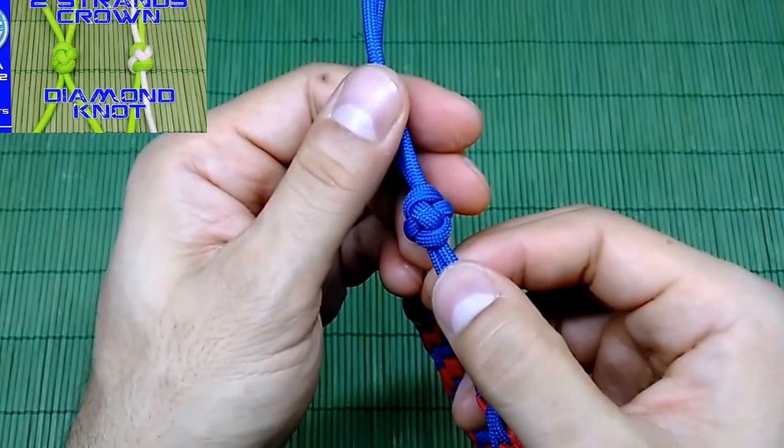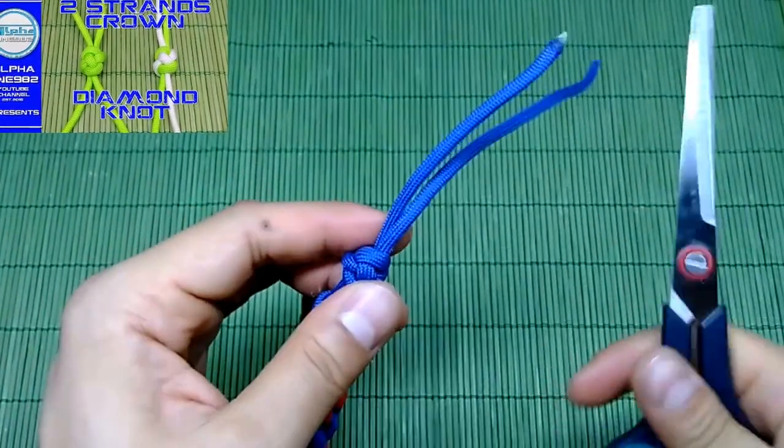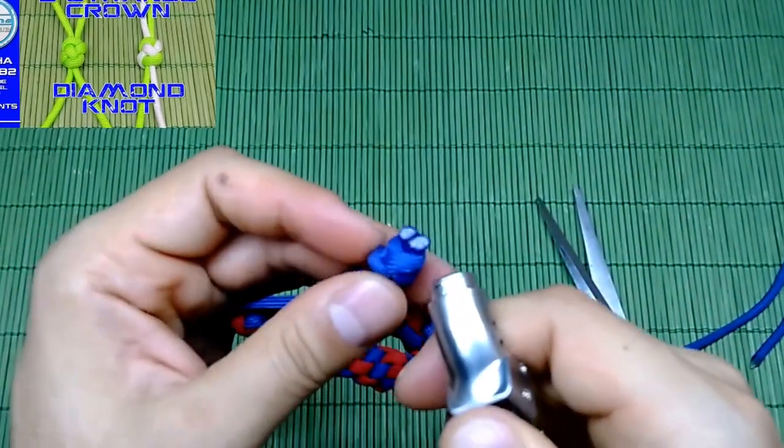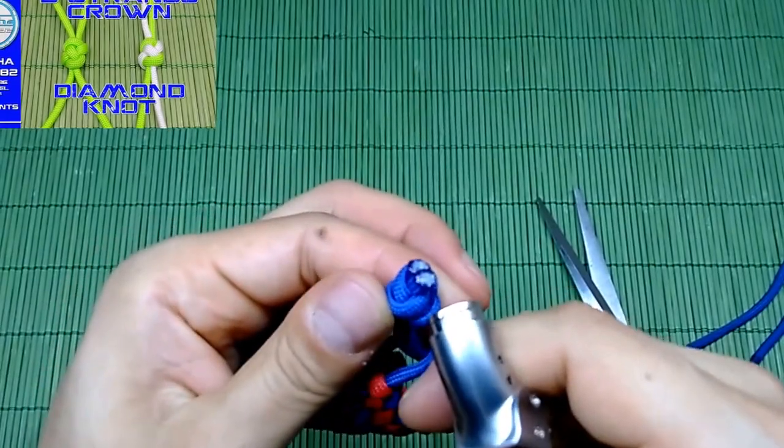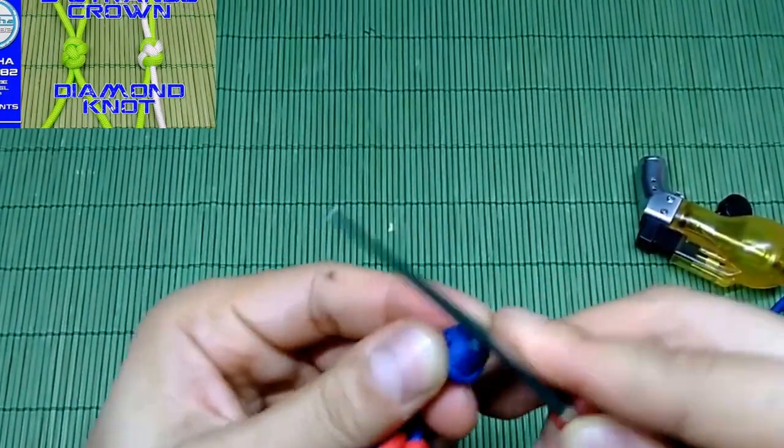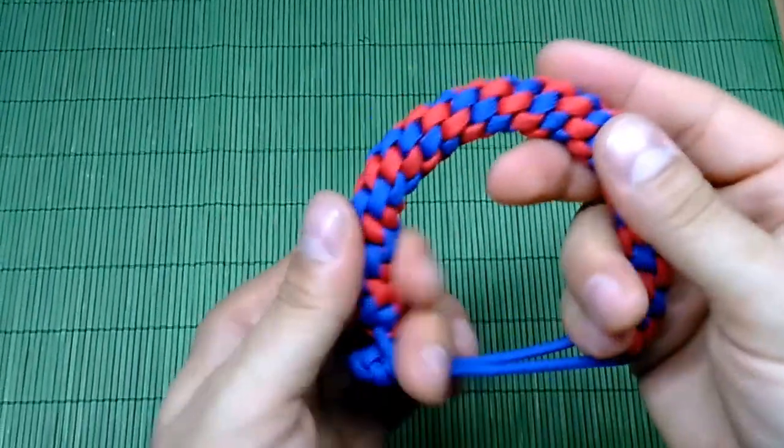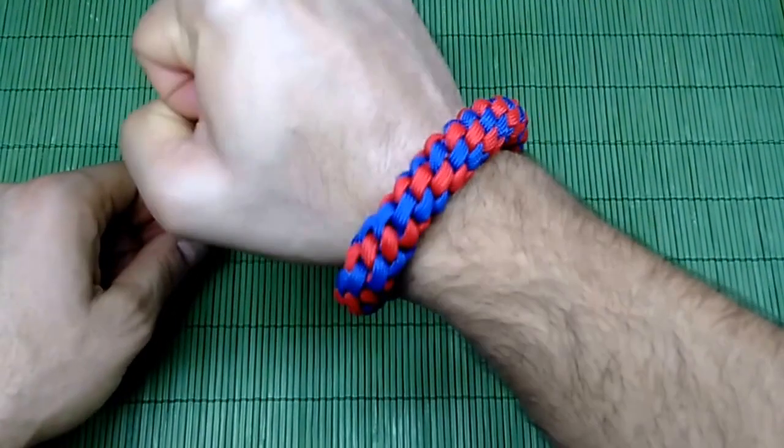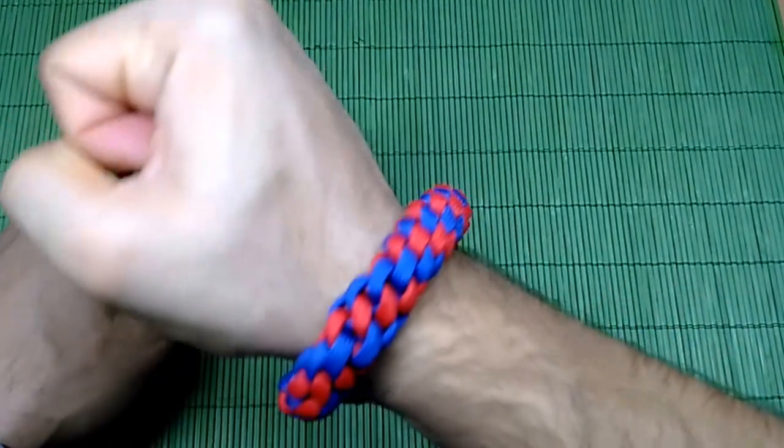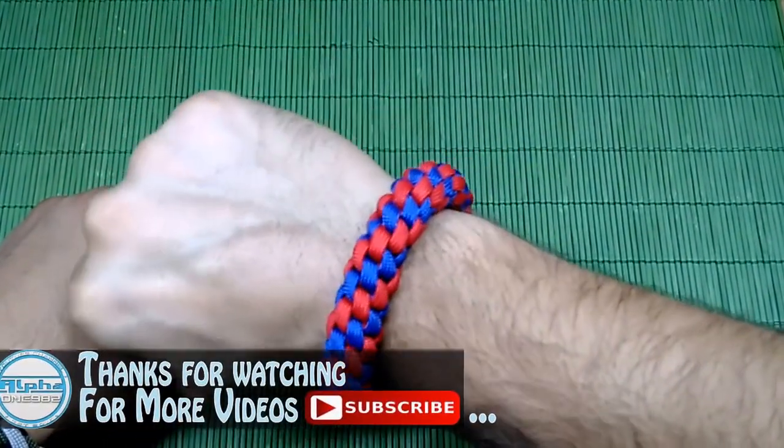After we finish our Crown Diamond Knot, here we are. Now the bracelet is finished. We are done with today's bracelet, the four-strand round braid with the finishing of the two-strand Crown Diamond Knot in the Mad Max style.